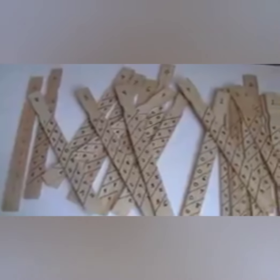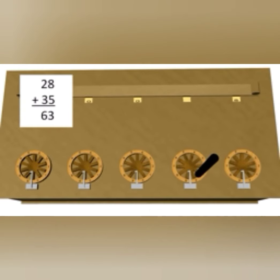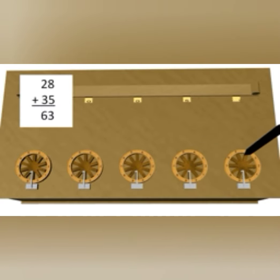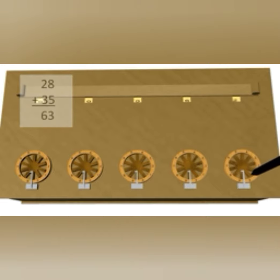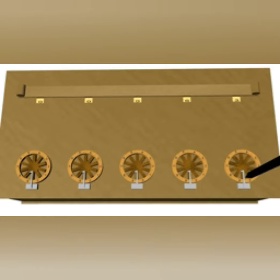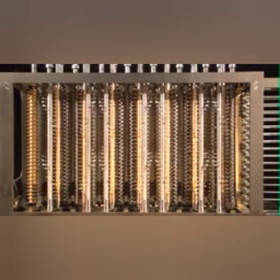It was later improved to find the square root of numbers. The third device is the Pascaline — the first mechanical calculator in the world. It was invented by a French mathematician called Blaise Pascal in 1642, and hence named after him. The Pascaline is made up of wheels and gears and is used for adding numbers quickly. The meters used in taxis nowadays are an example of the Pascaline.